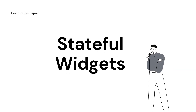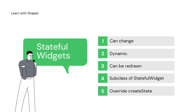Now let's talk about the stateful widget. A stateful widget is something that is dynamic and can change at any time and can be redrawn. We usually use the setState method inside stateful widgets to redraw the UI. A stateful widget is a subclass of the StatefulWidget class, and we need to override the createState method to provide the state class so that we can handle the state.